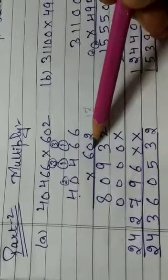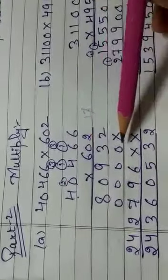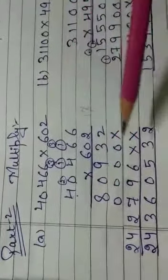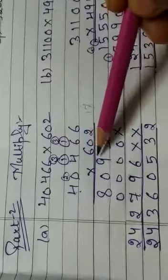Next digit is 0. You have to put 1 cross and multiply by 0. So, 0 will be completed.